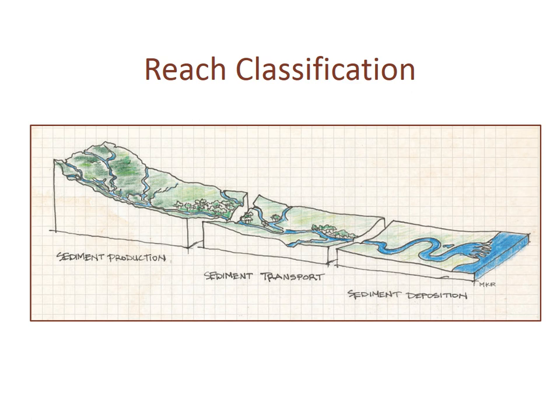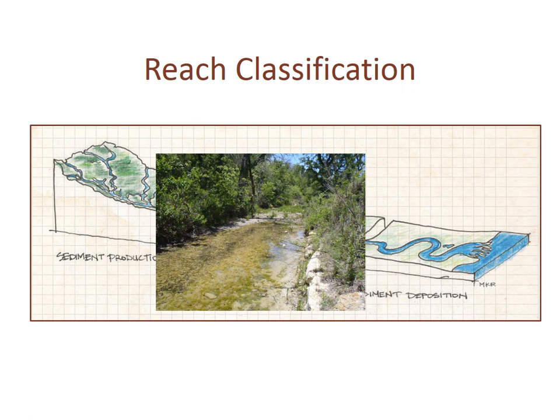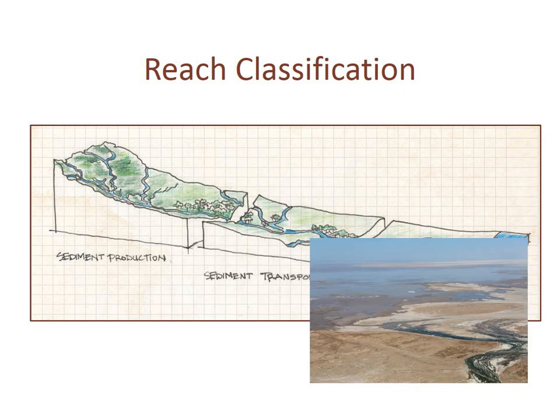Most large streams have at least three general reaches. First, there is a sediment production reach — often the headwaters of a river. Second, there is a sediment transport reach, usually the middle reach. And third, there is a sediment deposition reach, found near the mouth of a large river crossing flat country. Knowing the classification can aid in understanding the stream's plant communities as well as its overall functional condition.